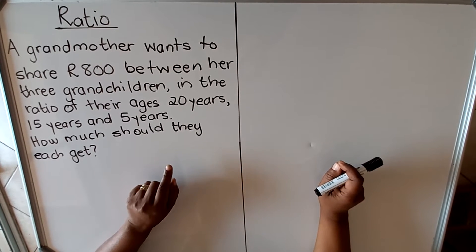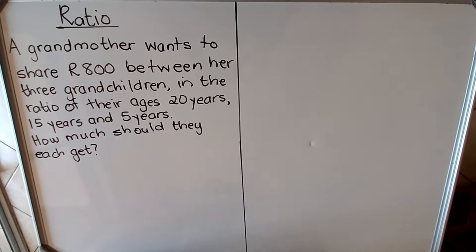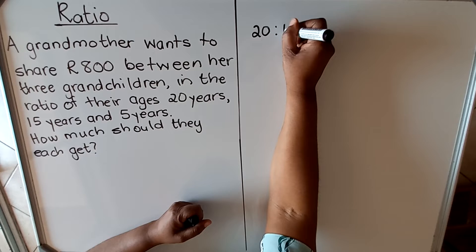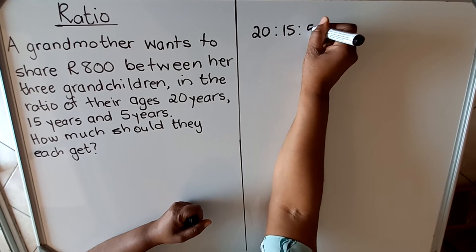What we see in this question is that they're not going to get the same amount. So the ratio that she wants to share is the first one is 20 years, the other one is 15 years, and the other one is 5 years.